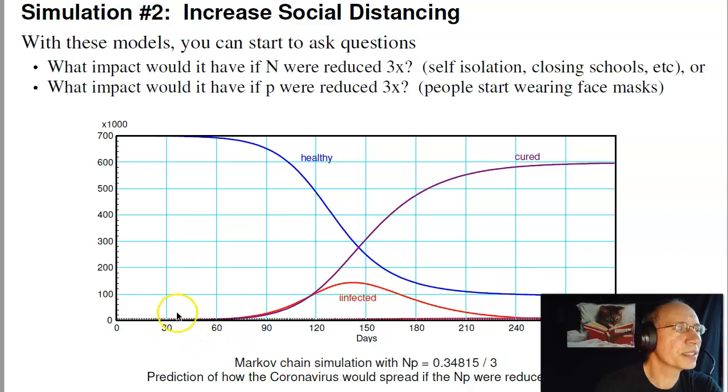The peak, instead of coming in mid-April, gets pushed out by four and a half months. So that's March, April, May, June, July. About mid-July, early August would be the peak.